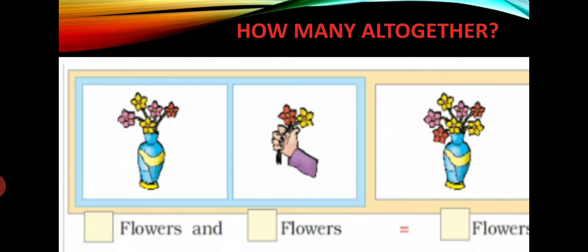And in the next box, how many flowers are there in a hand? 2 more flowers we have to put in the vase. 2 more flowers we have to add with those flowers. So we have to write 2. So 5 flowers and 2 flowers. Now how many all together? Now add all the flowers which are in the vase. Count it: 1, 2, 3, 4, 5, 6, 7. So total there are 7 flowers. So when we add 5 and 2 the answer is 7.